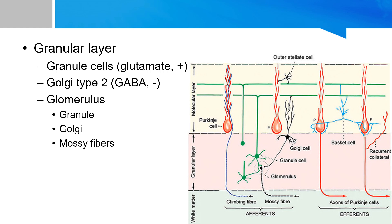The function of the glomerulus is to serve as the first processing station for afferent nerve fibers entering the cerebellum. Input comes from mossy fibers and synapses with Golgi and granule cell fibers, with information passed to granule cells from the mossy fibers, while the Golgi cells regulate the glomeruli with inhibitory signals.